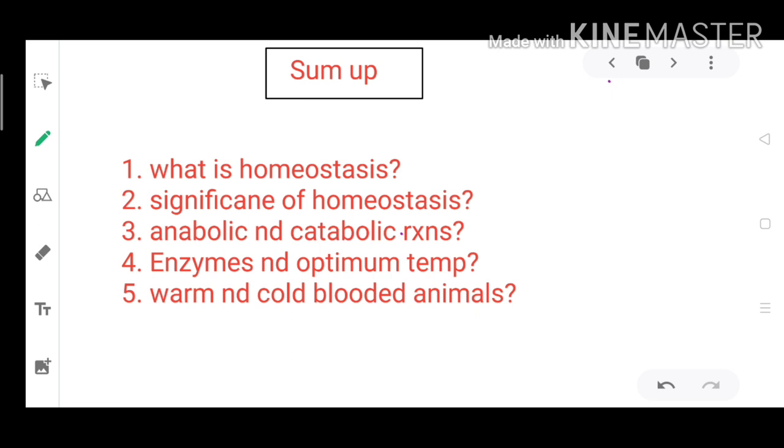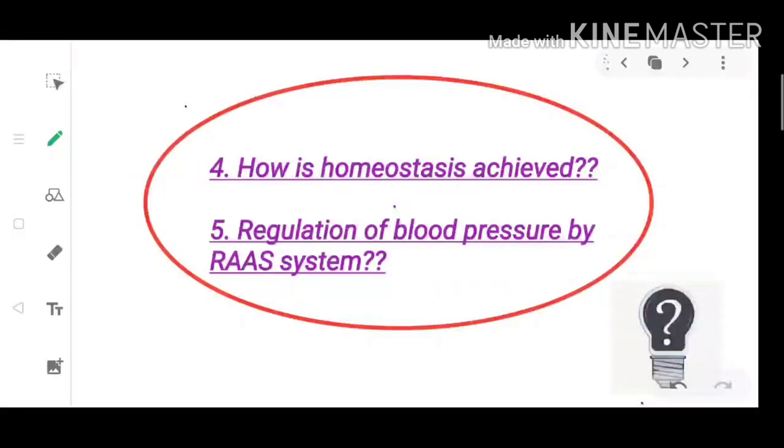Let us sum up what we have discussed till now. We have discussed what is homeostasis, significance of homeostasis, anabolic and catabolic reactions, enzymes and optimum temperature, and warm blooded and cold blooded animals.